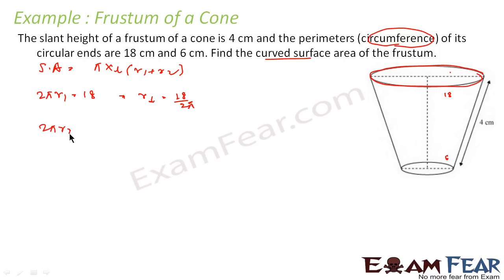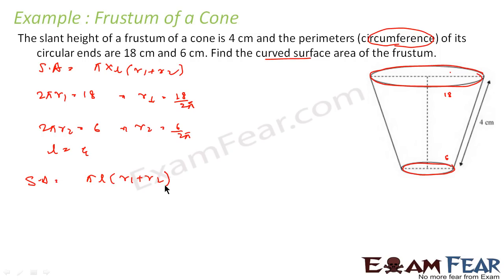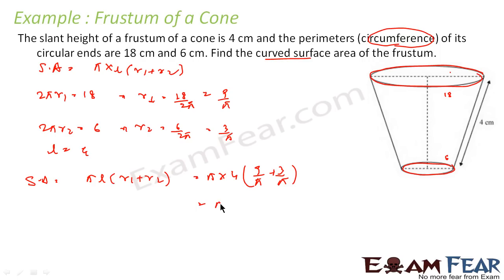Similarly, 2πR2 = 6, so R2 = 6/(2π) = 3/π. Now L = 4 centimeters. Applying the formula: surface area = π × 4 × (9/π + 3/π) = π × 4 × (12/π). The π cancels, giving 4 × 12 = 48 centimeters squared.